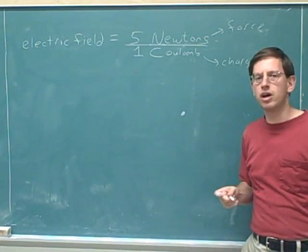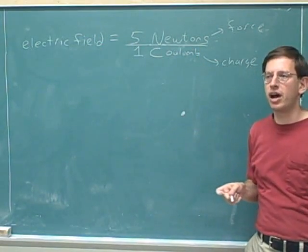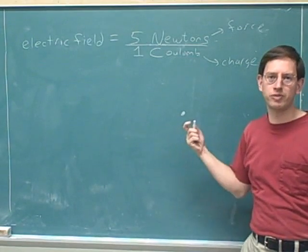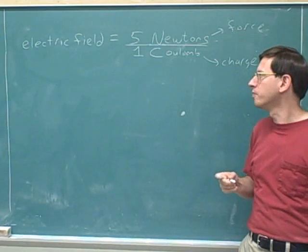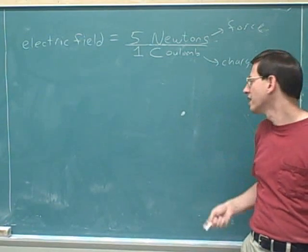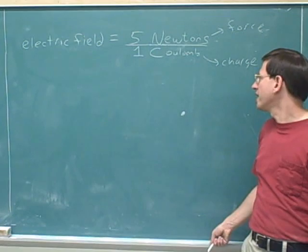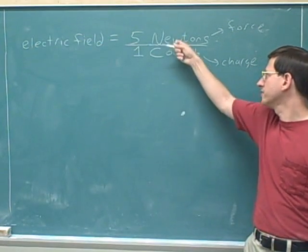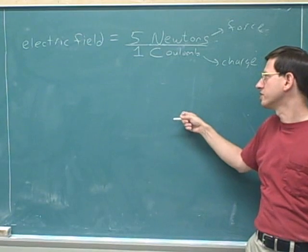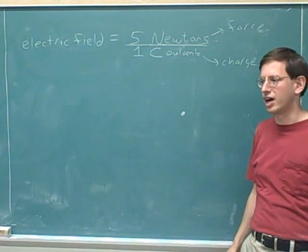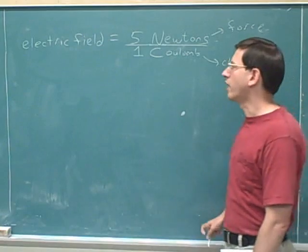Remember, even having a hypothetical piece of information can be very useful, because if you know what the force would be on a one coulomb charge, it shouldn't be hard to figure out what the force would be on a two coulomb charge or a three coulomb charge. Knowing that a one coulomb charge would feel five newtons of force, it shouldn't be too hard to figure out how much force a two or three coulomb charge would feel.